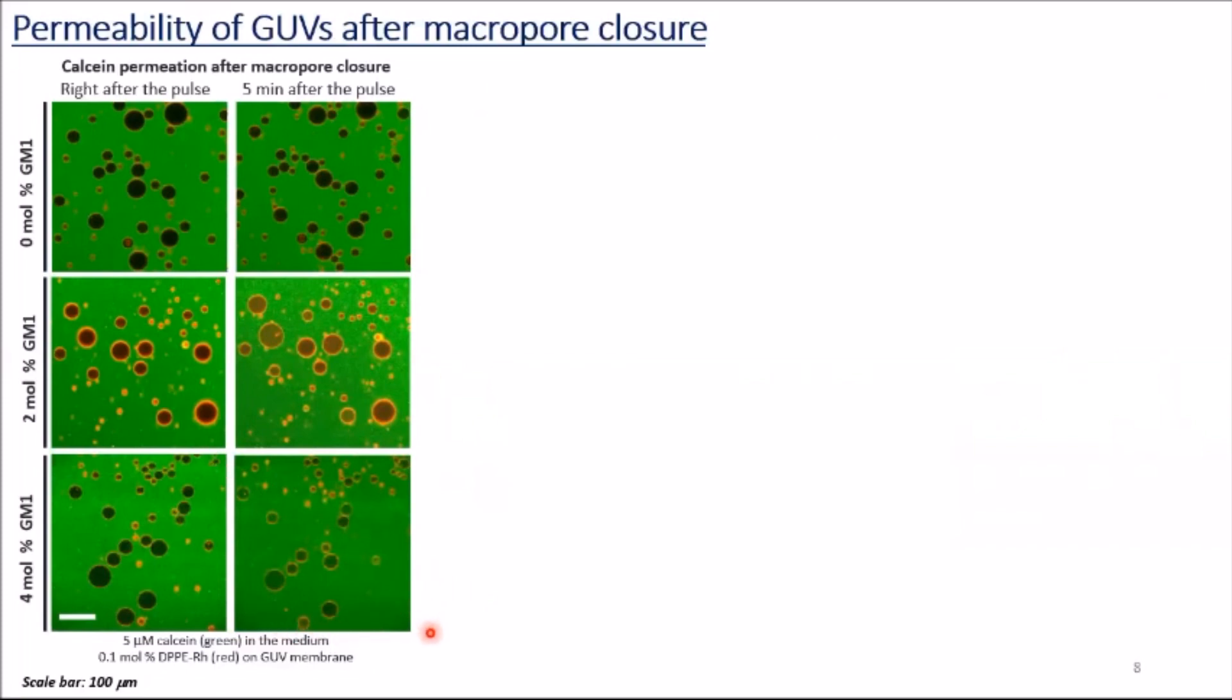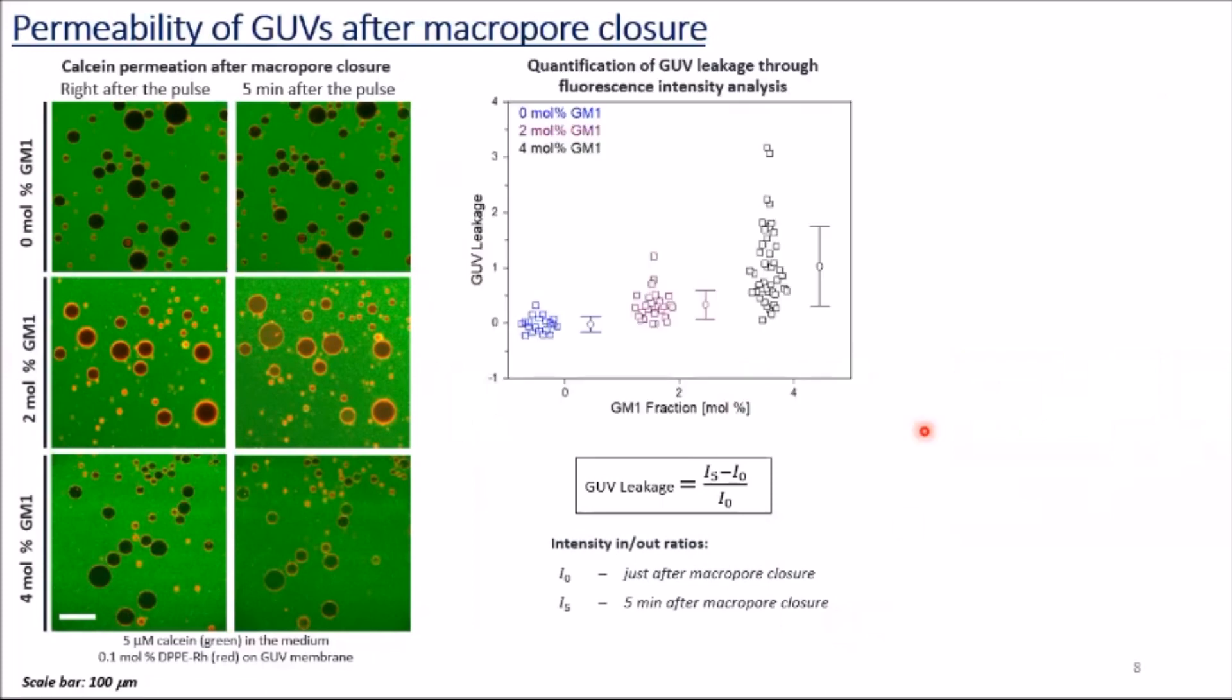In order to quantify the GUV leakage, we use the formula here, which includes intensity ratios at GUV interior and exterior. I0 is the intensity just after the macropore closure, and I5 is the intensity five minutes after the macropore closure. Then we plot this graph, in which each single square represents a single GUV, and results show that increasing GM1 fraction increases the number of leaky GUVs, so GM1 stabilizes submicroscopic pores.